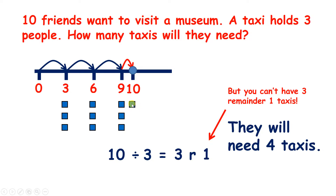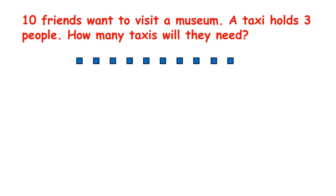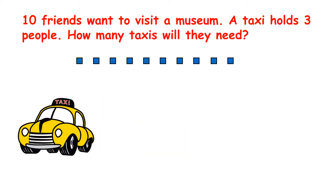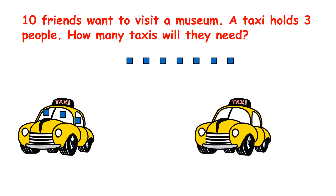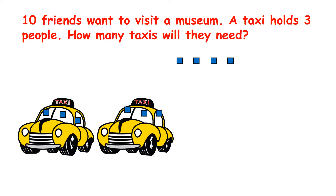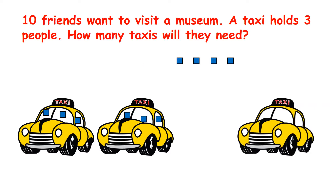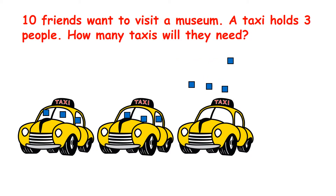Our one remainder is really a person who needs to get to the museum as well. Let me show you what I mean, so we're clear. So the first taxi comes along, and you'll have to imagine that these ten blocks are really ten friends. So the first three friends get in the taxi, then a second taxi comes along, another three friends get in, then along comes a third taxi, so three more friends get in, but we have one more person, and when we divide ten by three, this person is our one remainder.